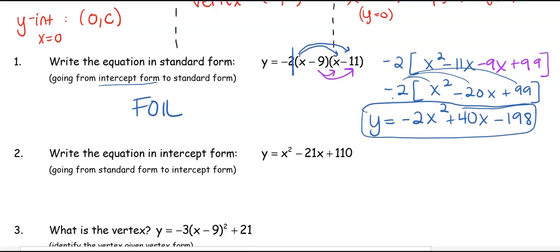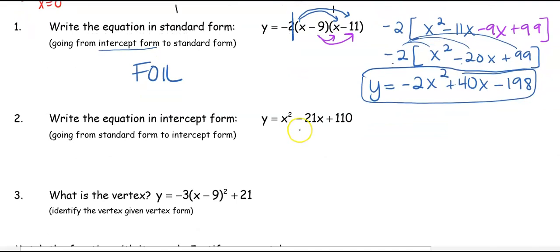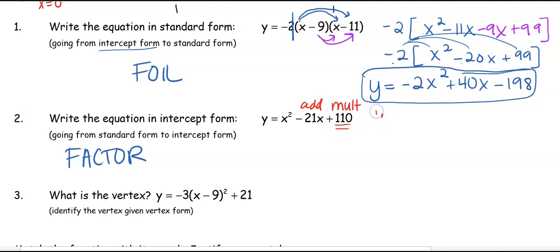If we want to go from standard form back to intercept form, we go the opposite way, which is factoring. When we factor, we're multiplying to the outside and adding to the middle. We always start with multiplying — think about all the different ways you can multiply to get 110: 1 times 110, 2 times 55, and so on.